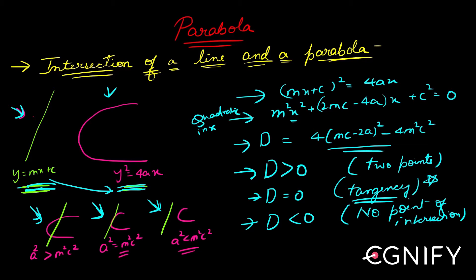Where am I getting these from? I'm just getting these from this. So for instance, if discriminant is greater than zero, then 4 into mc minus 2a whole squared minus 4m squared c squared should be greater than zero. That is the condition.